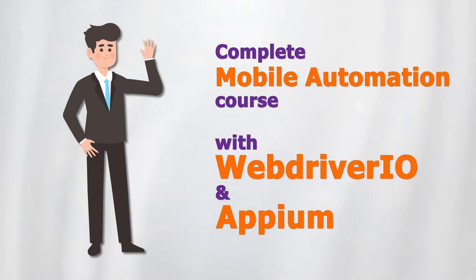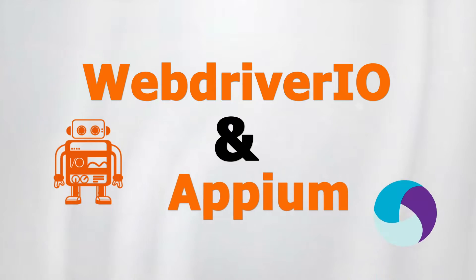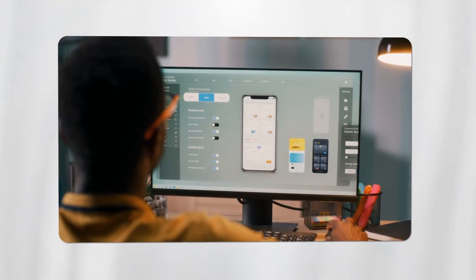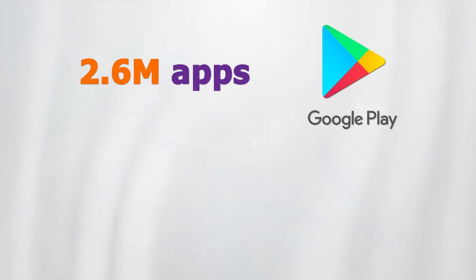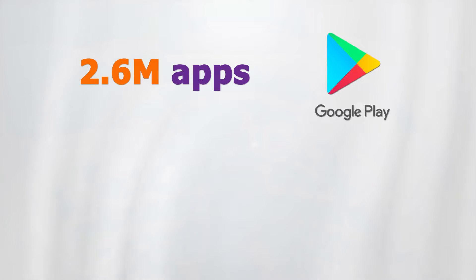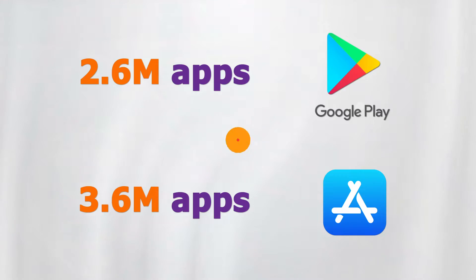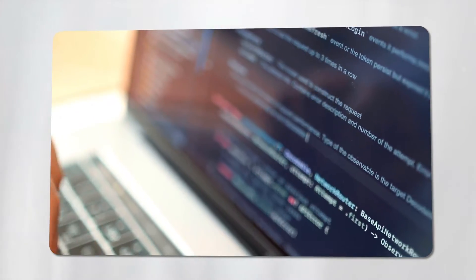Welcome to the complete mobile automation course with WebDriver.io and Appium. As you guys know, the development of mobile applications is increasing rapidly year by year. As of 2021, there are roughly 2.6 million applications on Google Play Store and 3.6 million applications on Apple App Store. As the development increases, the demand for putting quality applications out there increases as well.